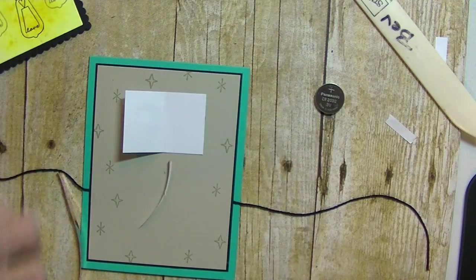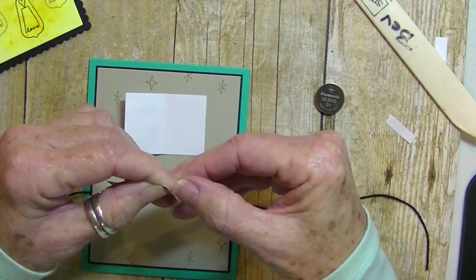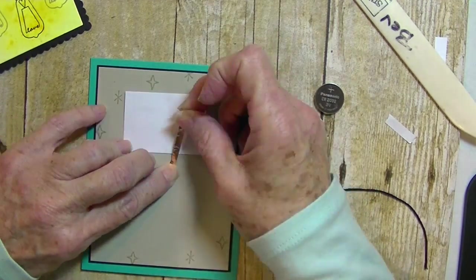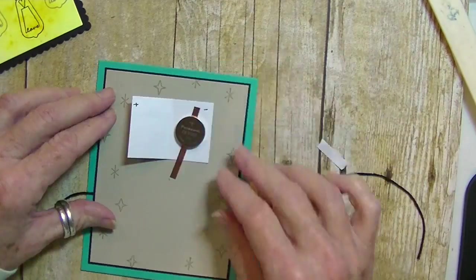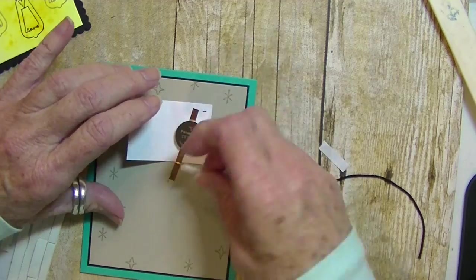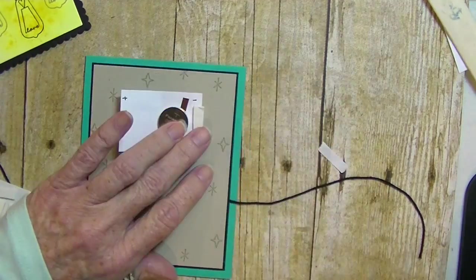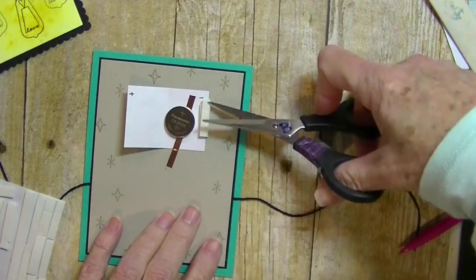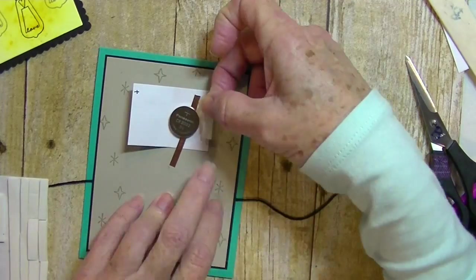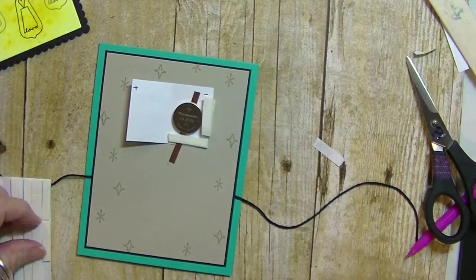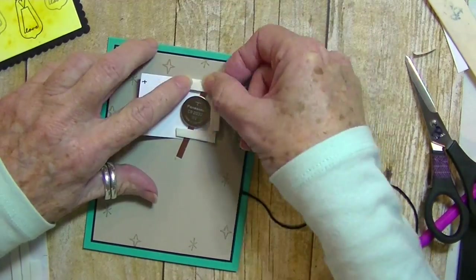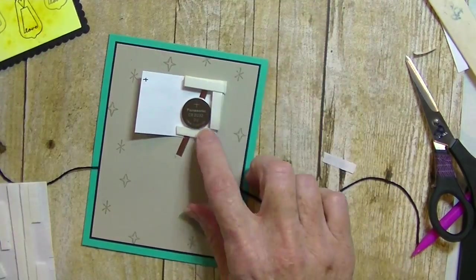Adding some copper tape for the negative side of the battery, creating the pocket for the battery to stay within when the card is being held and handled. That little short piece will be for the negative side of the circuit.